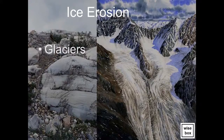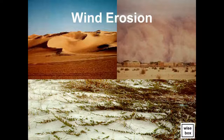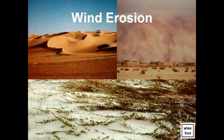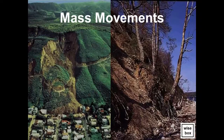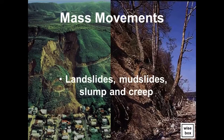Ice erosion is carried out by glaciers. Wind erosion also shapes the landscape. Mass movements include landslides, mudslides, slump, and creep.